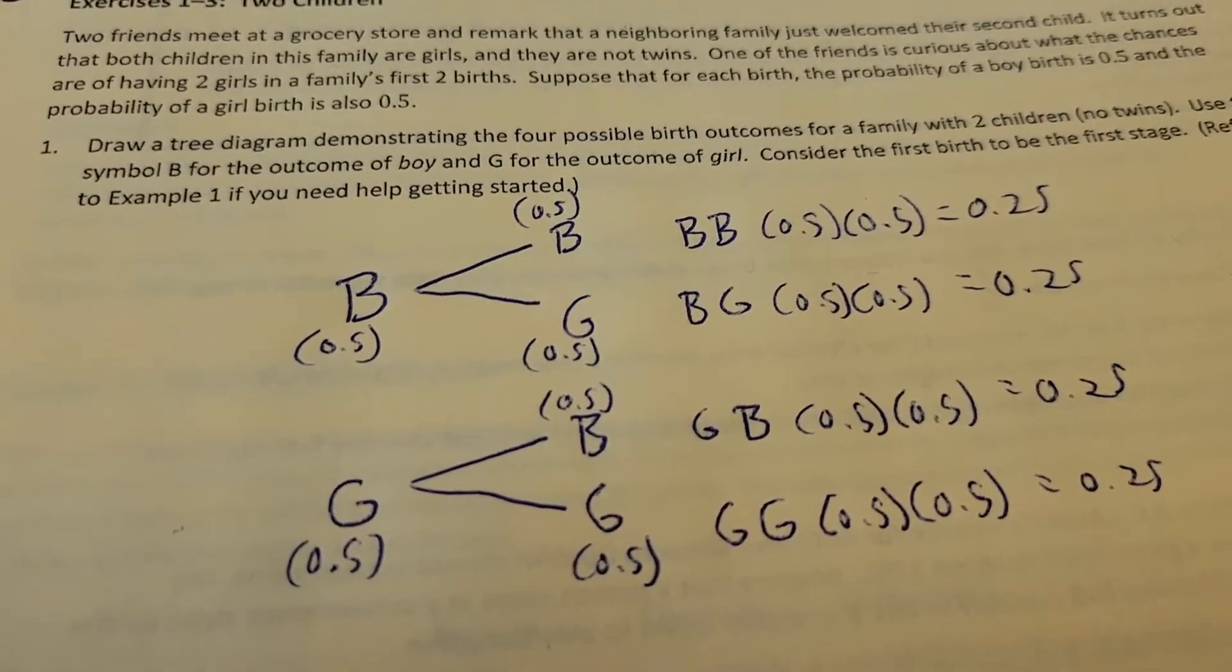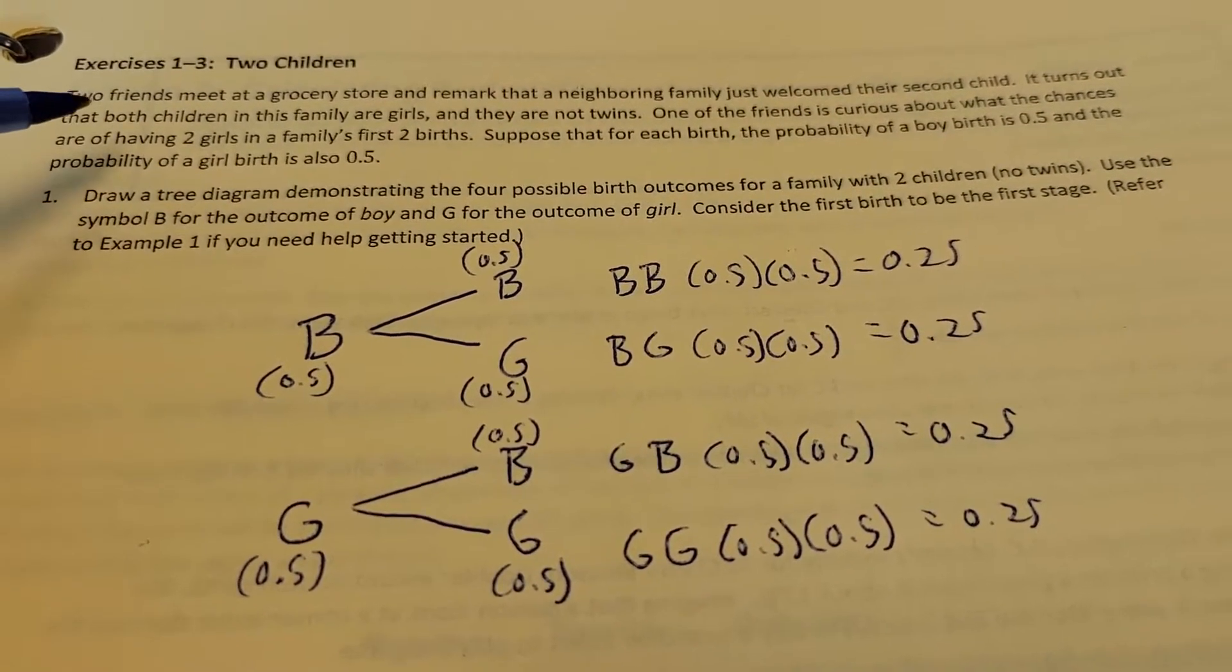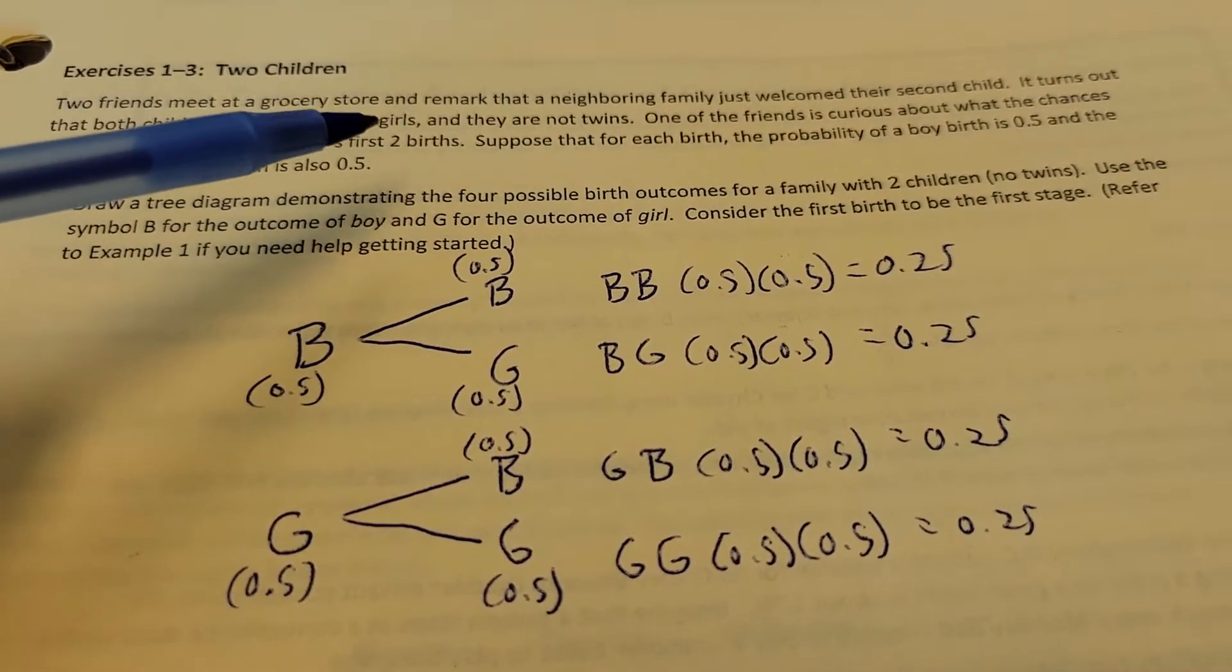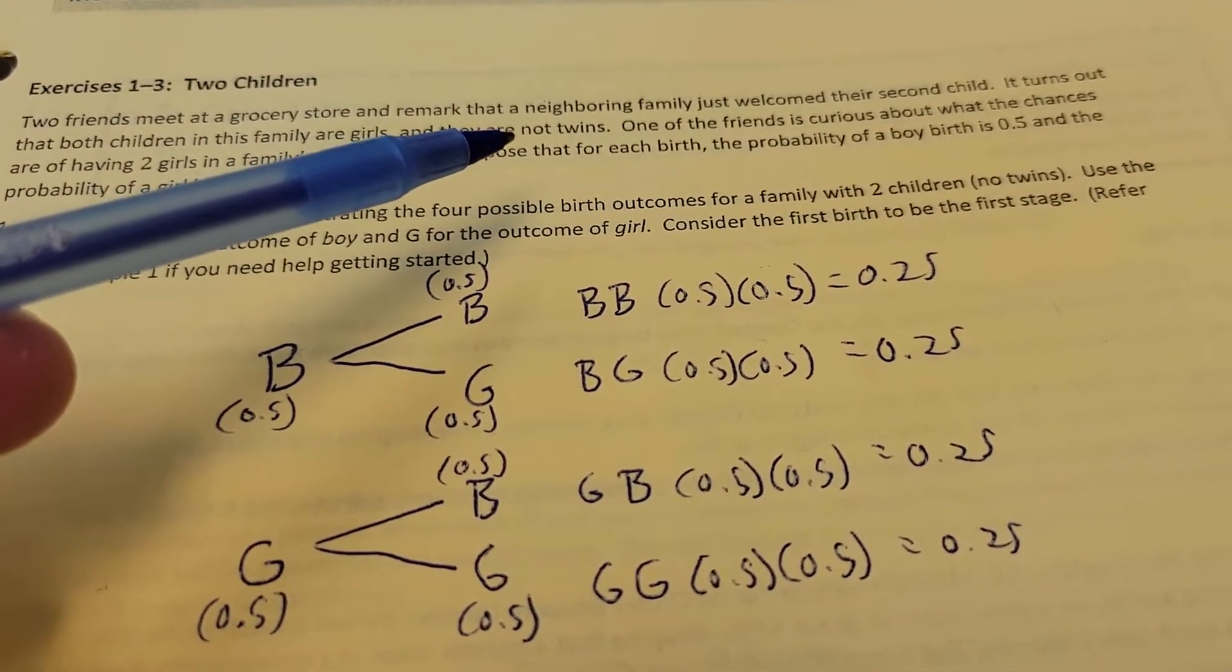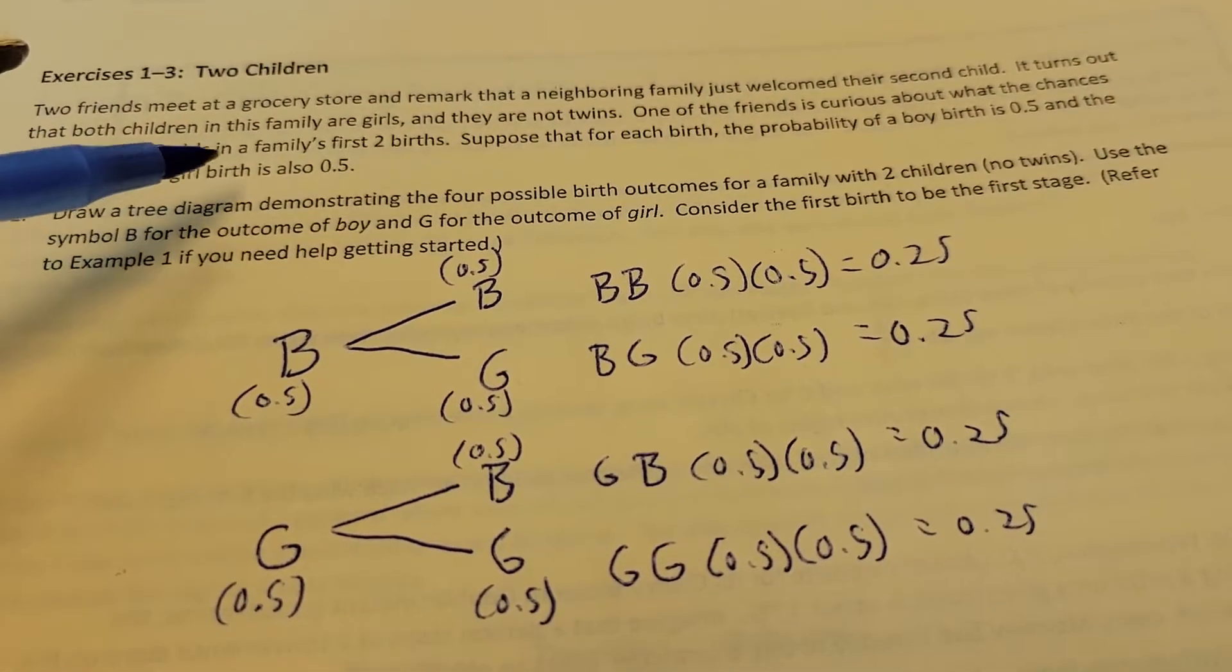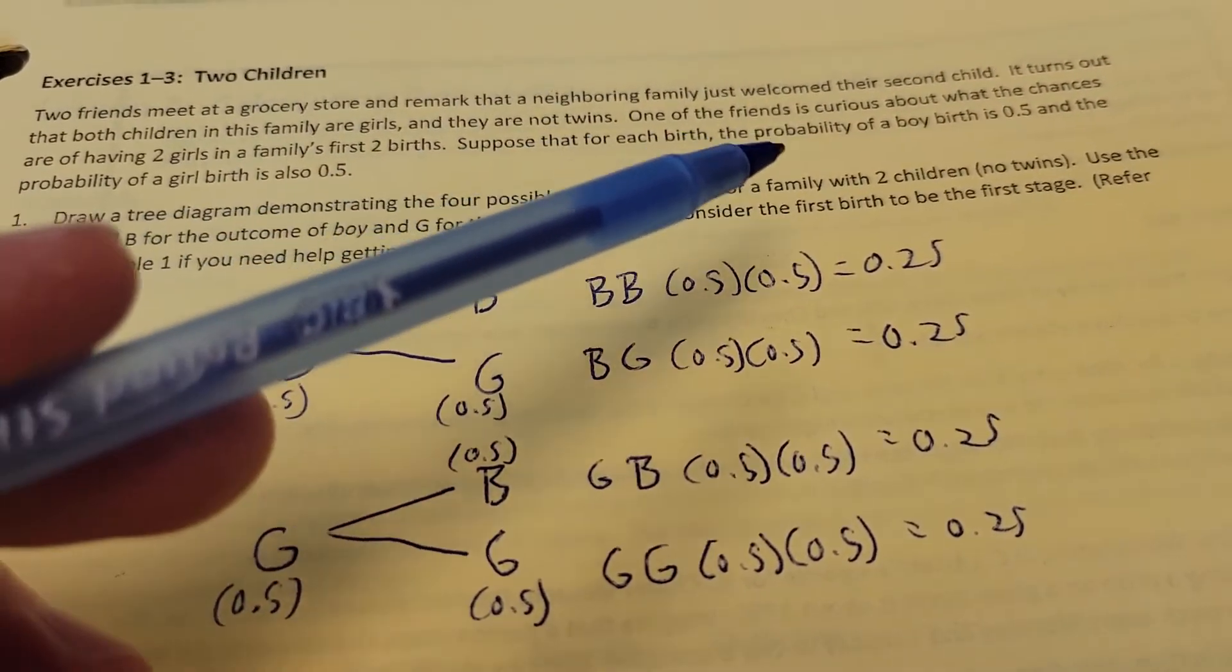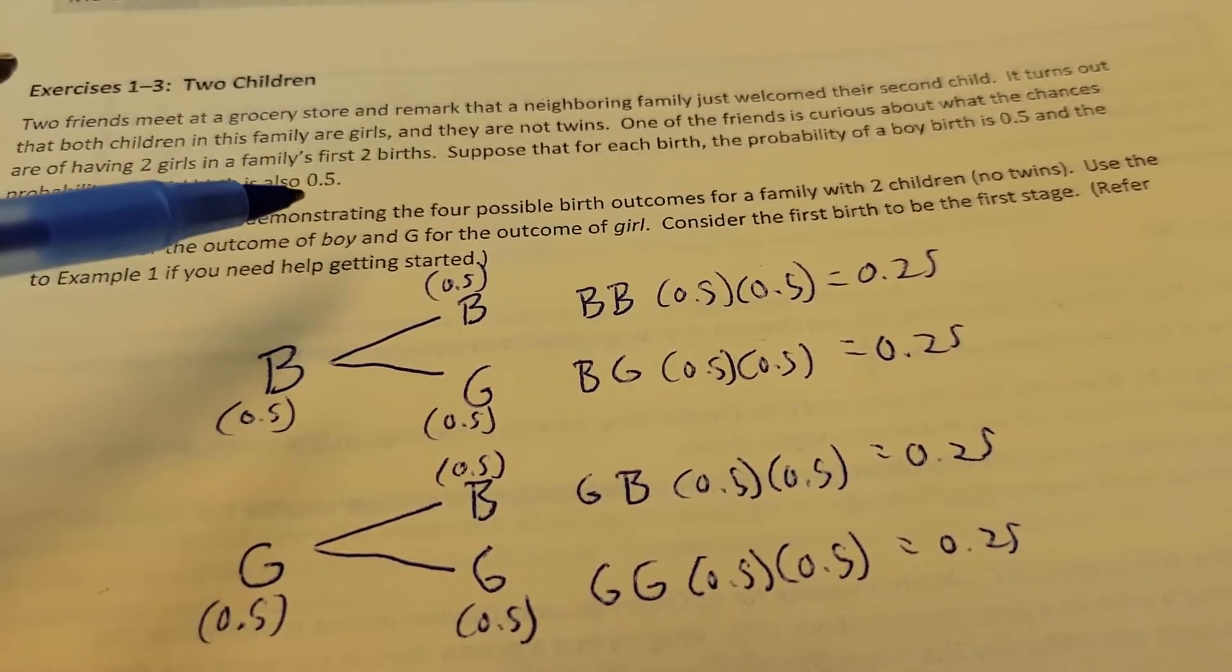Next up. Two friends met at a grocery store and remarked that a neighboring family just welcomed their second child. It turns out that both children in the family are girls. They're not twins. So they had a kid that was a girl, then a little bit later they had another kid that was a girl. One of their friends is curious about what the chances of having two girls are in the family's first two births. Suppose that for each birth, the probability of a boy birth is 0.5 and the probability of a girl is 0.5. So they're even chances, like a 50-50 chance.